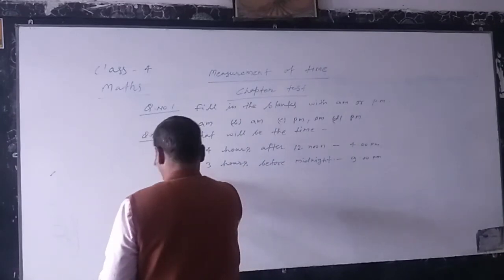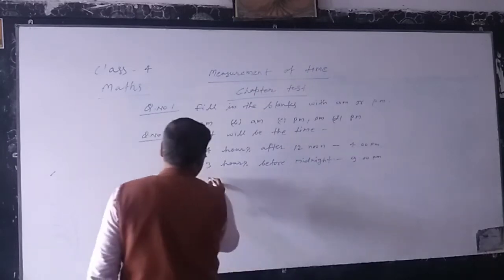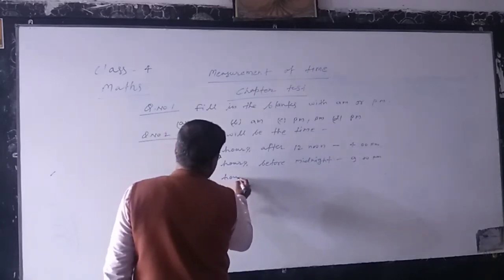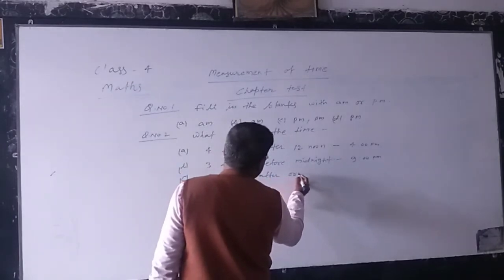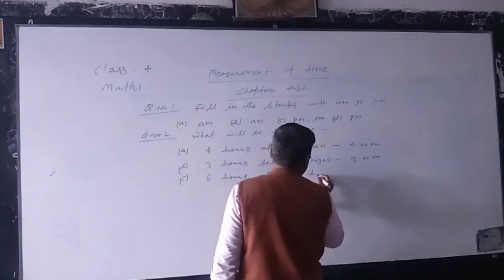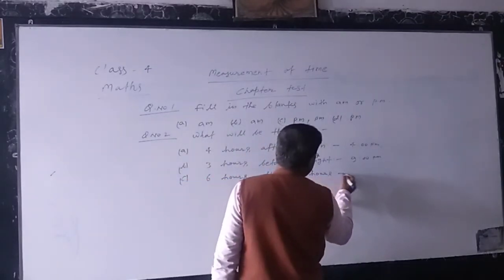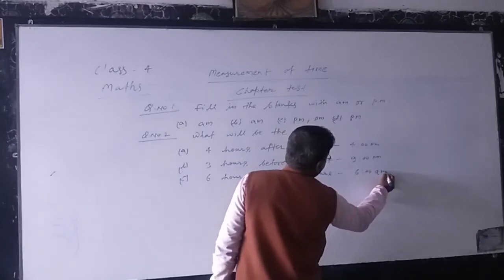C. 6 hours after 0000 hours. 6 hours after 0000 hours, you write 6 A.M.